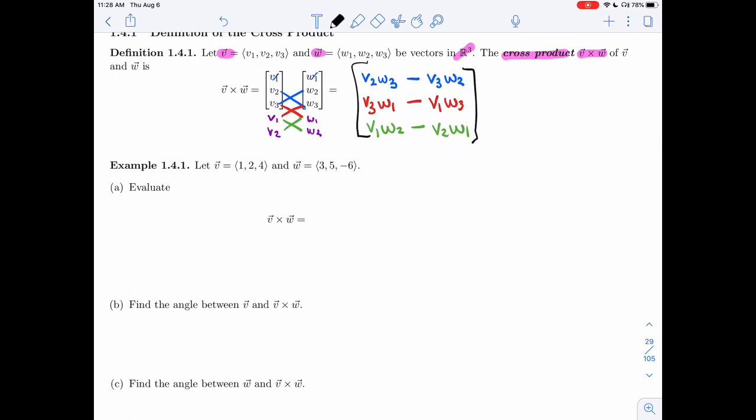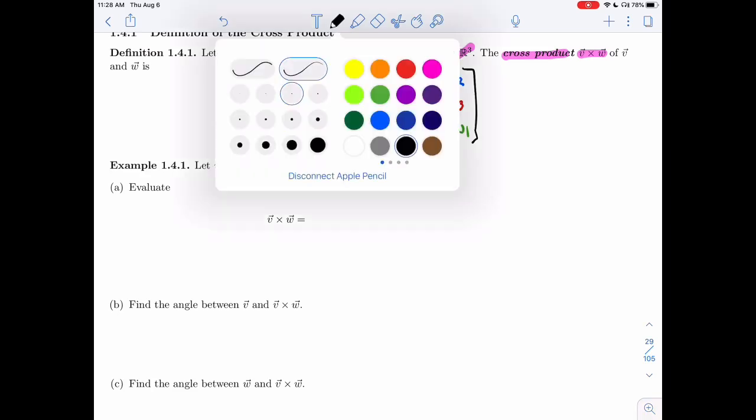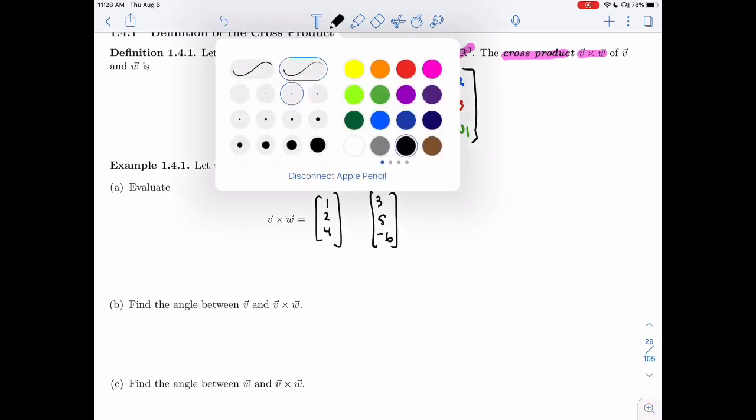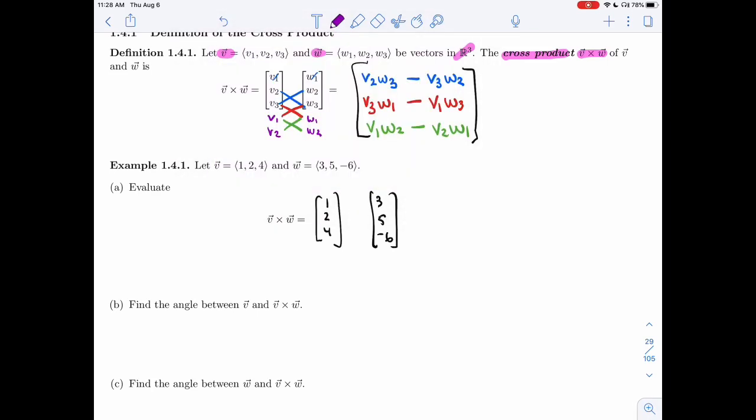So let's do an example. I'm given two vectors, 1, 2, 4 and 3, 5, minus 6. I'm asked to evaluate the cross product. So let me write 1, 2, 4, 3, 5, minus 6. And I'll do exactly what I did in the definition here. I'm going to rewrite the first two components of each of these vectors.